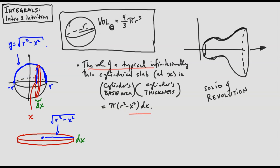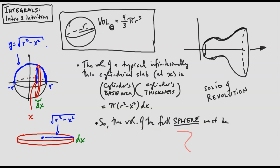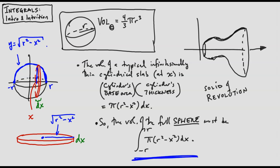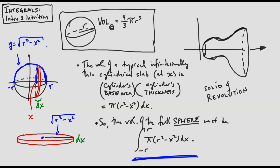To get the volume of the full sphere, we take the volume of one slice and add them all up as x runs from minus r to r. So the volume of the sphere is the integral from minus r to r of pi times (r squared minus x squared) dx. This integral will be straightforward to evaluate once we have the fundamental theorem of calculus. If you understand this argument and then understand the fundamental theorem, you will know why the volume of the sphere is four-thirds pi r cubed.